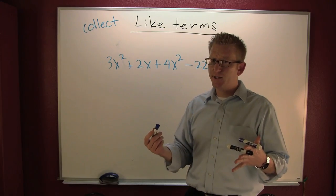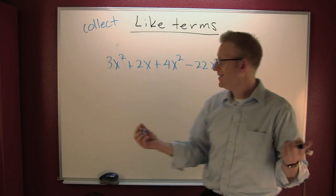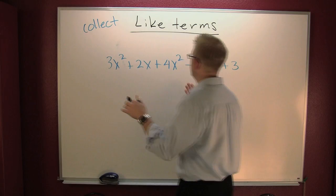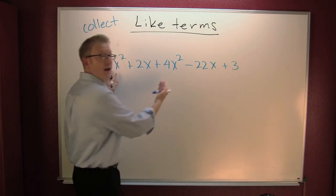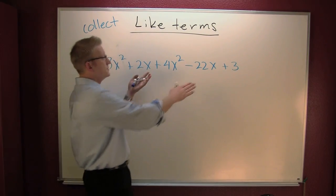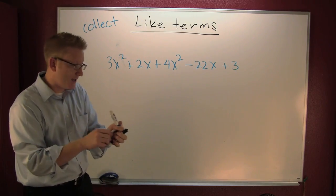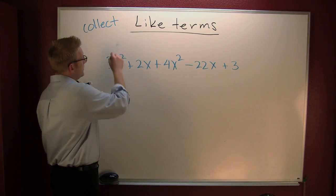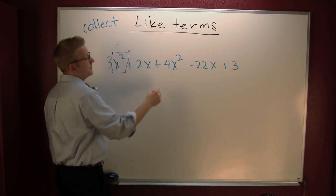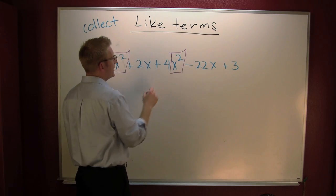First we need to identify whether or not we have any like terms. Do we? Yeah. We got squares. And we got singles. So I like to, at least here and now, box my like terms.